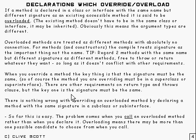When you override a method, the key thing is that the signature must be the same. The method you are overriding must be in a superclass or superinterface, because you can't have two methods with the same signature in the same class or interface. There are other requirements too — the return type must be compatible and the throws clauses must be compatible. But the key thing is: when you overload, the signature must be different; when you override, the signature must be the same.